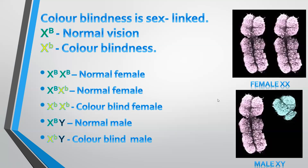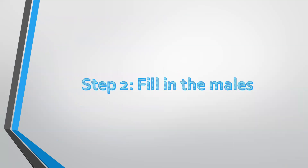Given a pedigree diagram, the key gives us the phenotypes. If we see a female with normal vision, we won't be sure because she could be homozygous or heterozygous. Whereas a colorblind female must be homozygous recessive. For males, we are sure of both genotypes, so we'll start with step two: filling in the genotypes for all of the males.